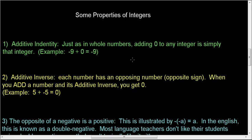In this video, we're going to demonstrate some properties of integers. These, for the most part, also apply to whole numbers, or at least for the first one. Whole numbers don't have negative numbers, and so properties 2 and 3 are not going to be applicable to whole numbers.